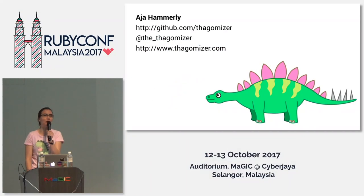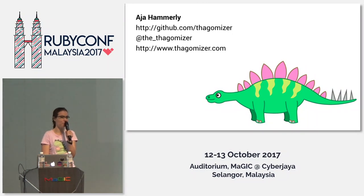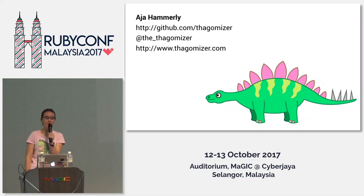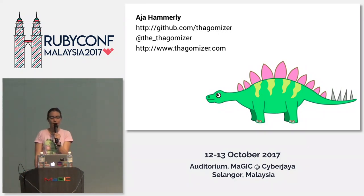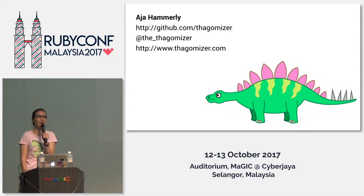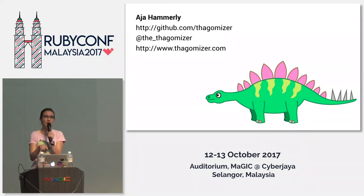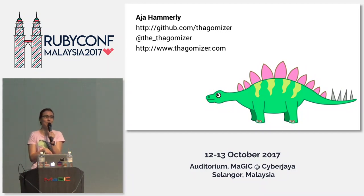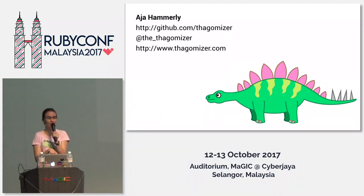Hello. I'm Aja Hamerly. I am from Seattle, like Aaron who will be talking tomorrow. I am Thagomizer on GitHub, TheThagomizer on Twitter, and I blog at thagomizer.com. I like dinosaurs a lot. Thagomizer is that spiky part at the end of a stegosaurus. I was gifted the domain name by a partner almost ten years ago, and it just kind of exploded from there. I even have Thagomizer earrings now.